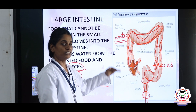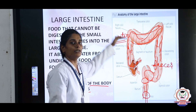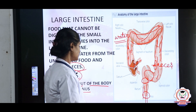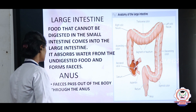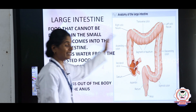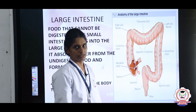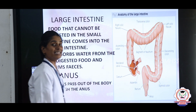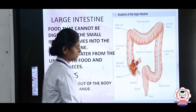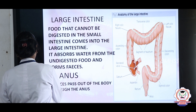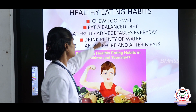The digestion process starts from your mouth and ends at the anus. These are all the digestive organs involved in the digestion process.